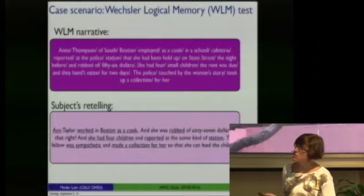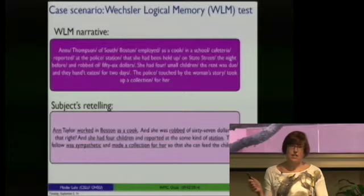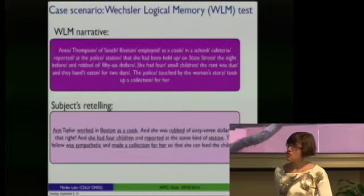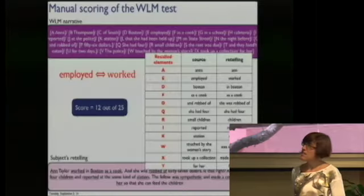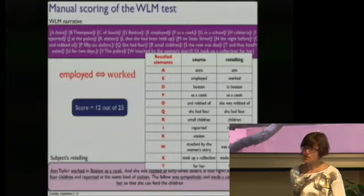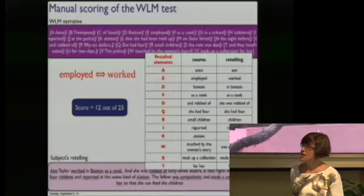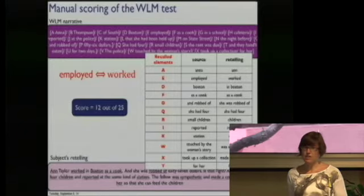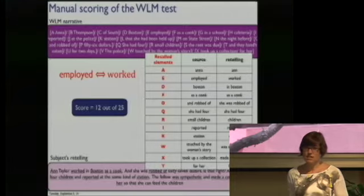The box at the top represents the source narrative that the clinician reads, with the 25 story elements separated by backslashes. The box at the bottom is an example retelling with recalled story elements underlined. The clinician counts the recalled story elements. In this example, the retelling would get a score of 12 out of 25. The clinical specification guidelines indicate which variations are allowed — for example, for the story element 'Anna,' any name variation of Anna is allowed, such as 'Ann.' Or for 'employed,' the word 'work' is also an allowed variation.